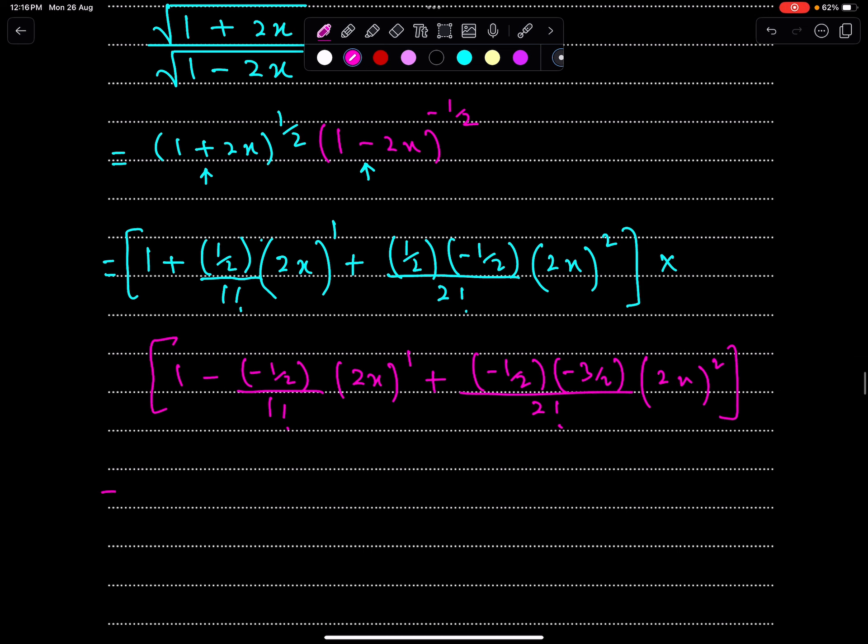Now simplify both expansions separately. So, 1 plus x. These two will cancel out. Then minus sign. We have three 2s: 1, 2, 3. So this will become 8, and this will become 4. So we have 4x squared over 8.